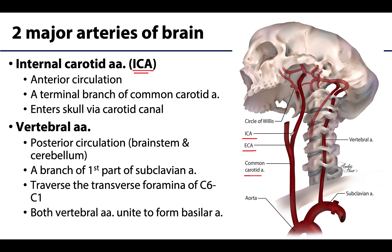The ICA travels higher into the neck and enters the skull via the carotid canal, following a complex passage through bone, and it also traverses the cavernous sinus for a distance. Eventually it reaches the base of the brain and is important in what is often called the anterior circulation, meaning it supplies blood to the more anterior portions of the brain.